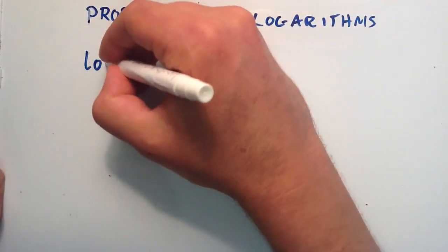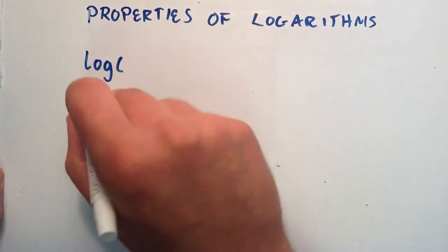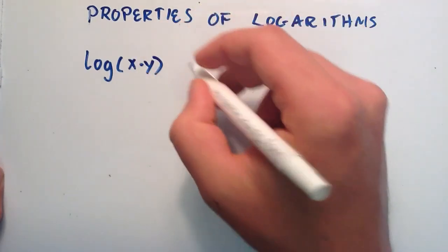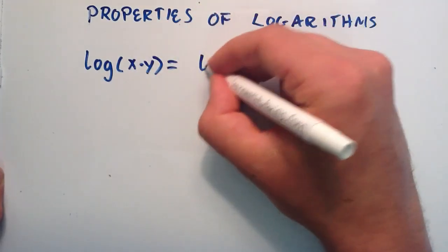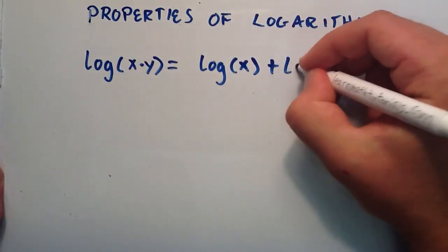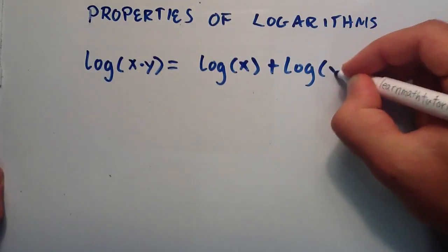So here's the first important property that I want to show you. If we have a logarithm of one number times another number, we can rewrite this as the logarithm of that first number plus the logarithm of the second number.